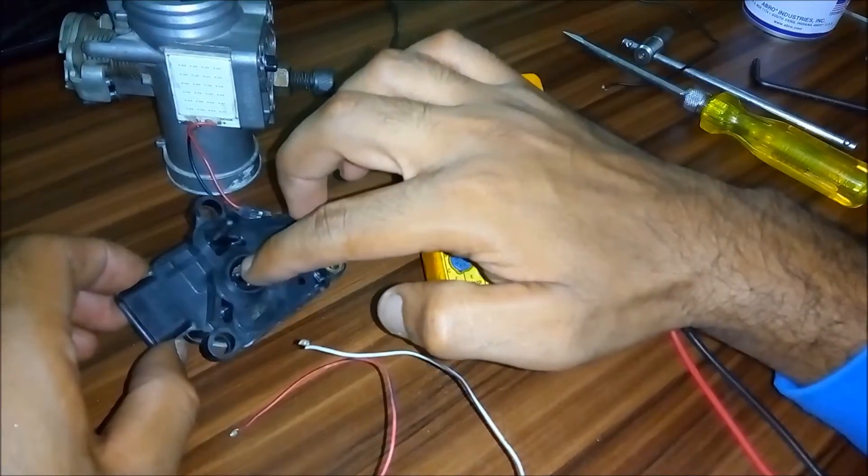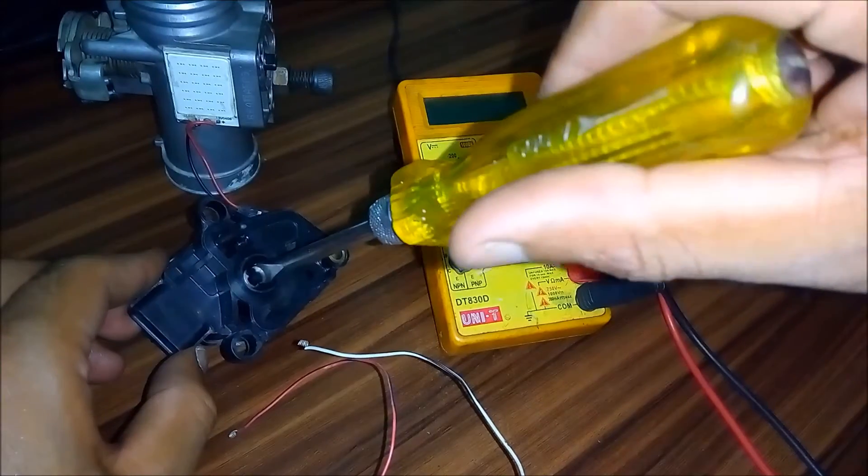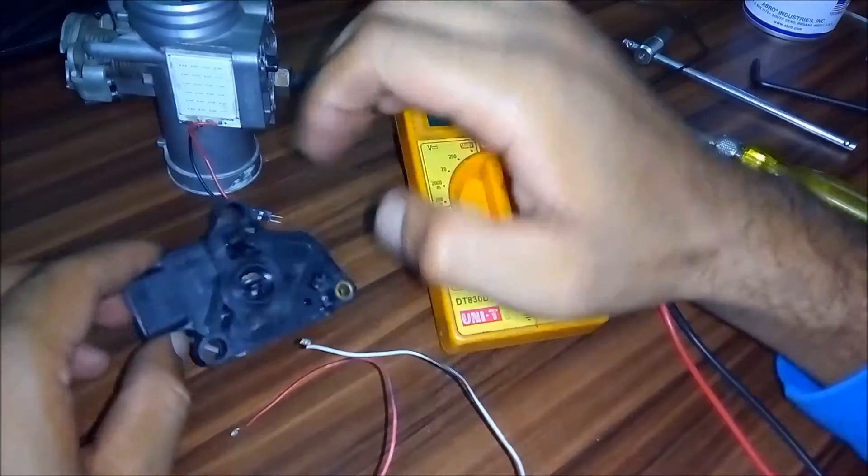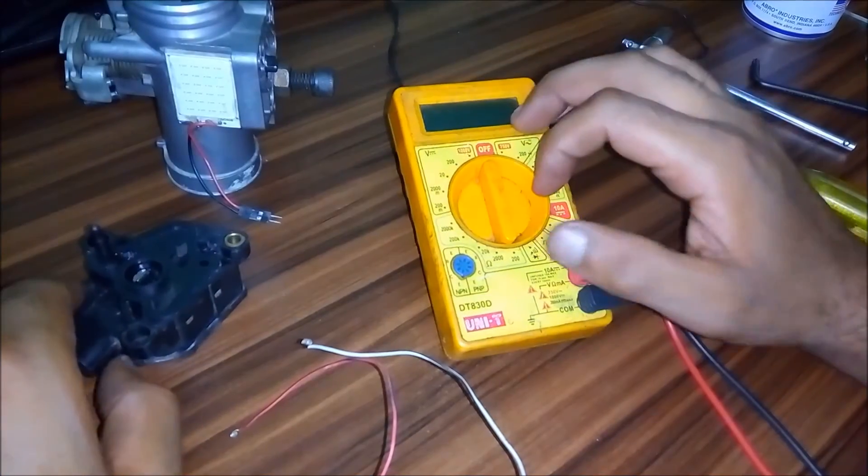Let me just show you how it rotates. If you are having a bad TP sensor, you might be having poor throttle response and poor mileage, of course.